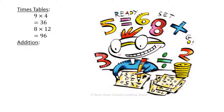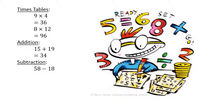Addition. 15 plus 19 equals 34. Subtraction. 58 minus 18 equals 40.